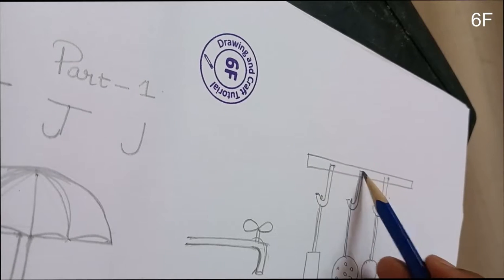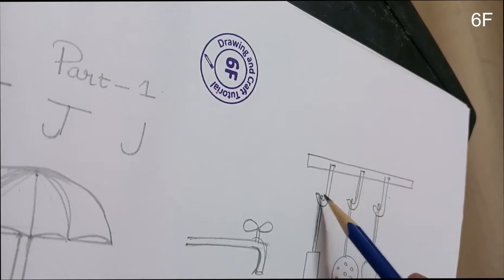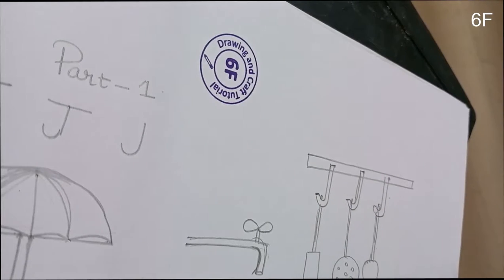This J is a key holder, like an anchor. Let me color it and show you.